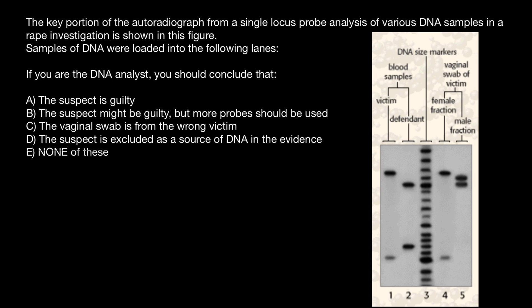So what we see here: this is a sample from the victim from the blood. This is a sample from the defendant from the blood also. This is a reference ladder, and this is a vaginal swab of the victim. And of course in the vaginal swab, we would find cells that have been shed by the vagina.